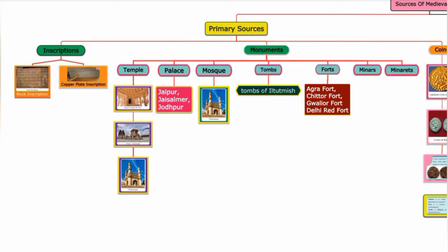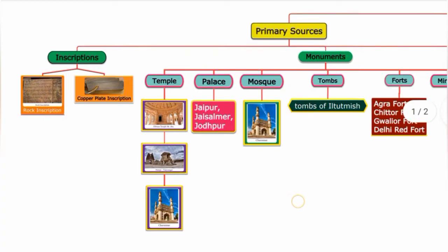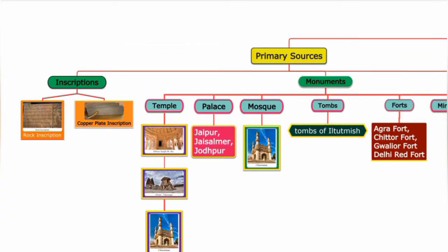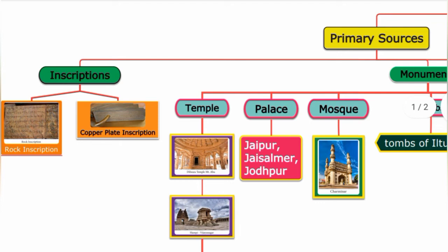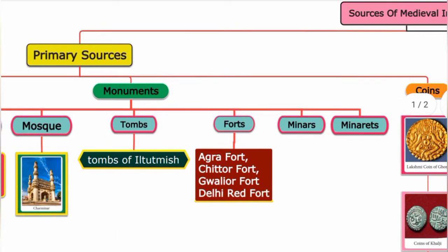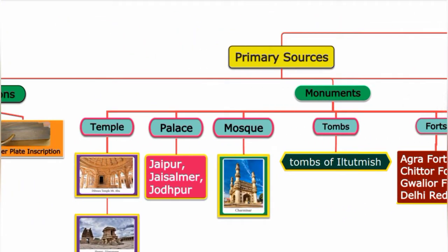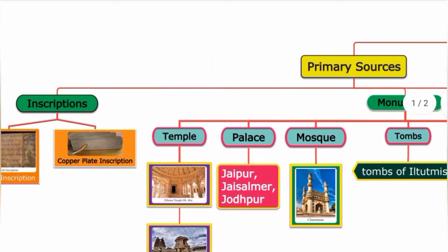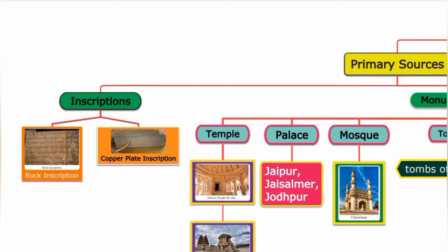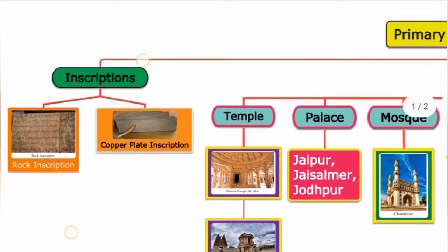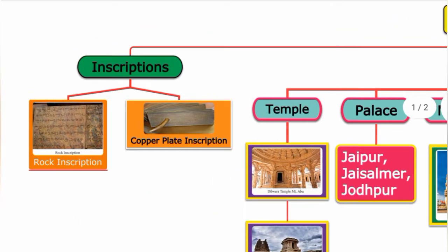Under primary source materials, we have inscriptions — including rock inscriptions, copper plate inscriptions, and temple wall inscriptions. We also have monuments and coins. These are the primary sources. Rock inscription and copper plate inscription are the main types of inscriptions.